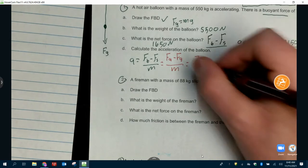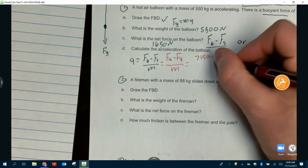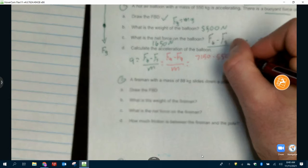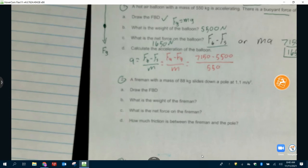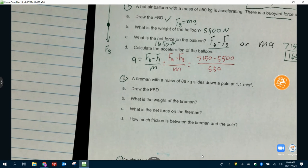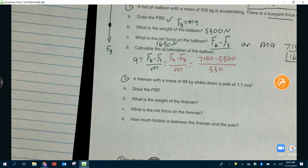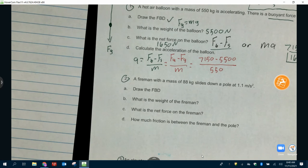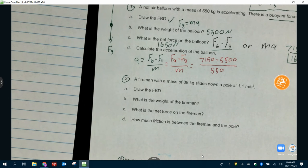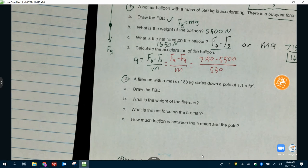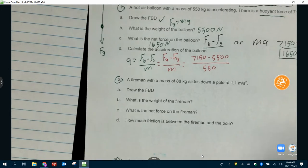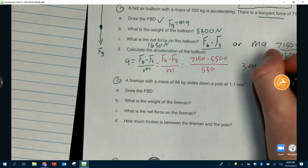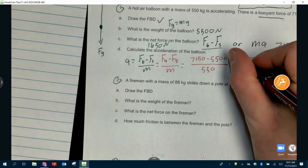So, F_A again is 7,150 minus 5,500 over 550. We get 3 meters per second squared.